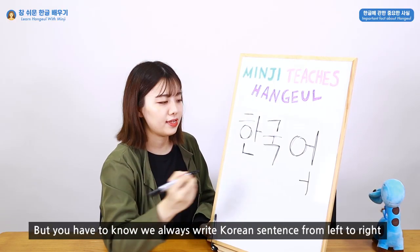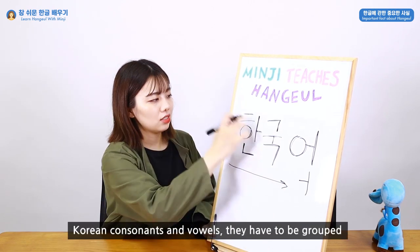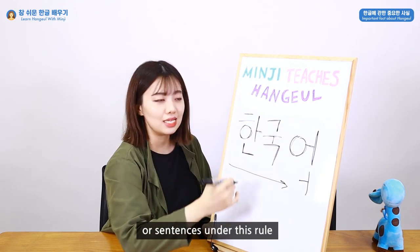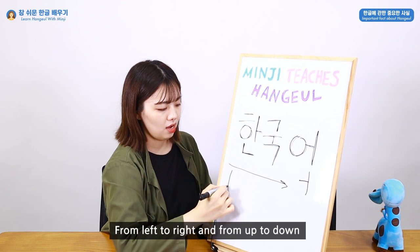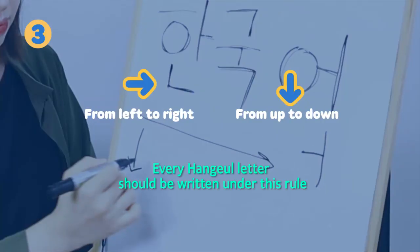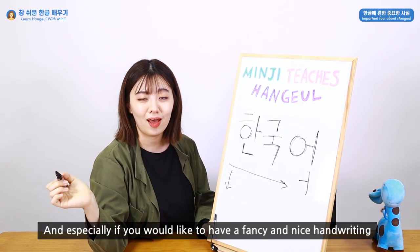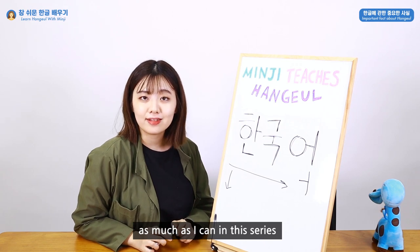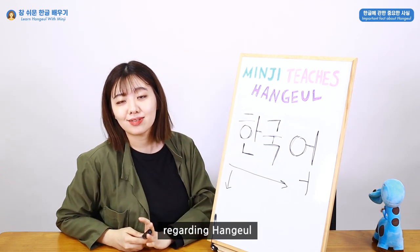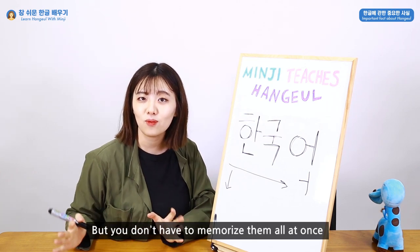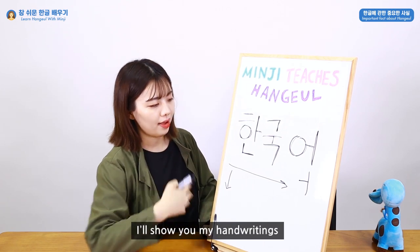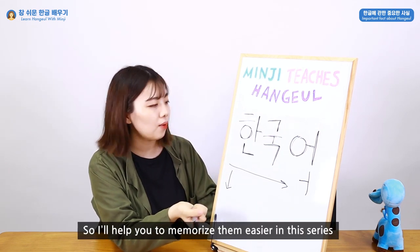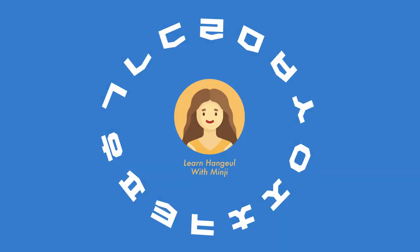We always write Korean sentences from left to right. Korean consonants and vowels have to be grouped in a perfect square shape, so it is actually much easier to write Korean words under this rule — from left to right and top to bottom. I know it sounds like there are a lot of rules regarding Hangul, but you don't have to memorize them all at once. The most important thing is to learn it in a fun and easy way, so I will help you memorize them more easily in this series.